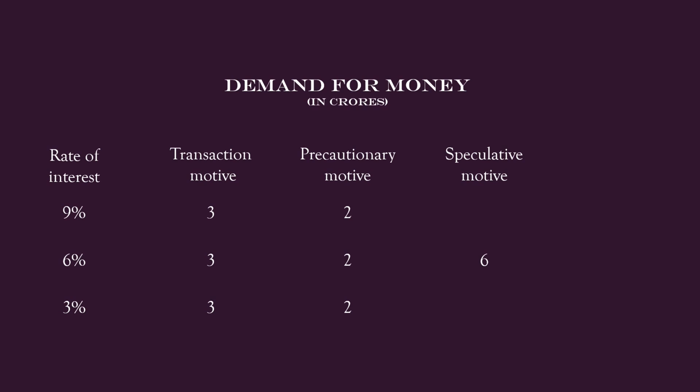Speculative demand for money is highly sensitive to the rate of interest. At 9% interest, the community demands 2 crores of money under speculative motive. At 6% it wants to hold 6 crores. At 3% the community's demand for money is 10 crores. There is an inverse relation between the rate of interest and the demand for money, where demand for money refers to the amount the community wants to keep readily to buy bonds.